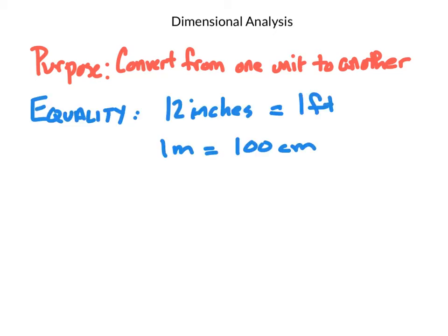An equality is exactly what it states. It's two things that are equal to one another, but it's usually given in two different units of measure. So 12 inches equals one foot is an equality. One meter equals 100 centimeters is an equality. From those, we create something called conversion factors.